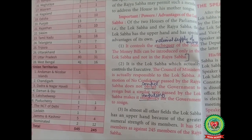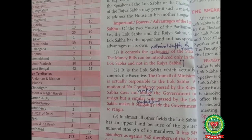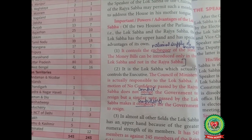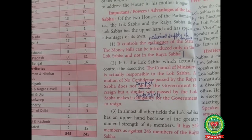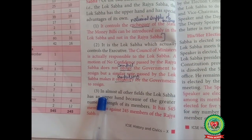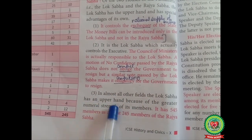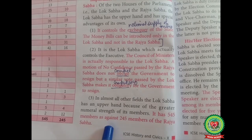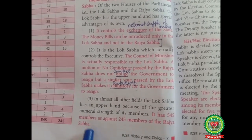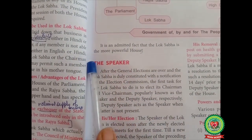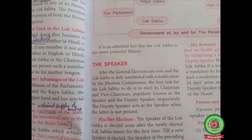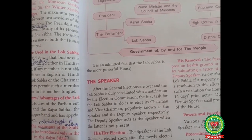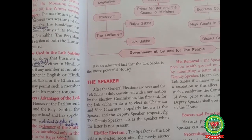Lok Sabha has full control over the executive. The council of ministers is answerable to the Lok Sabha, which may remove a cabinet by a vote of no confidence or reject a bill or budget. In almost all other fields, the Lok Sabha has an upper hand because of the greater numerical strength of its members — it has 545 members as against 245 members of the Rajya Sabha — making it the more powerful house.